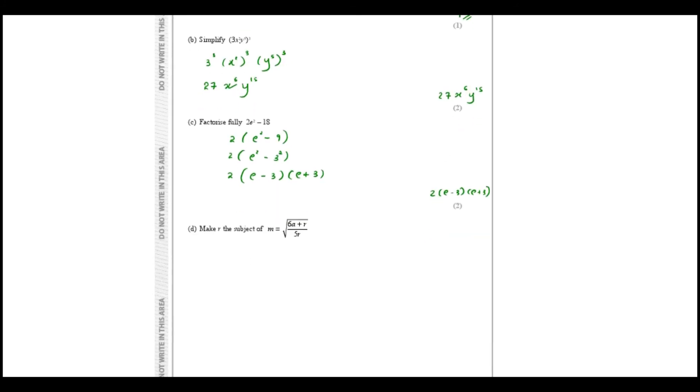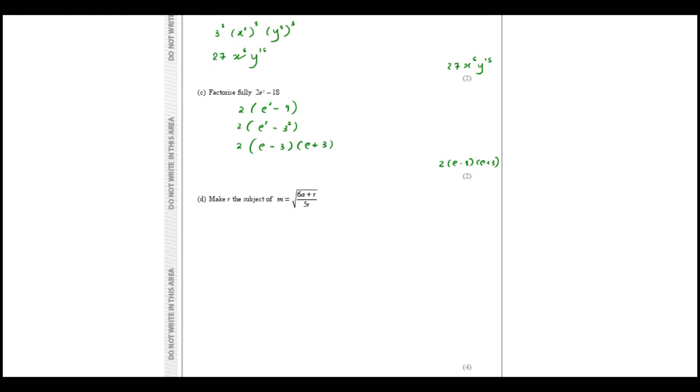Moving on to part d: make r the subject of m equal square root of 6a plus r over 5r. The first thing I'll do is I can't move any of these to the other side because the entire thing is surrounded by the square root. I'll remove the square root to the other side as a square, so m square equals 6a plus r over 5r.